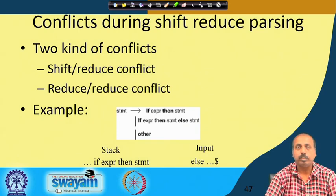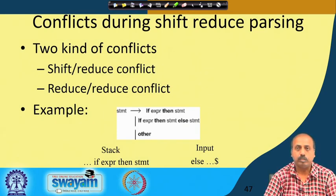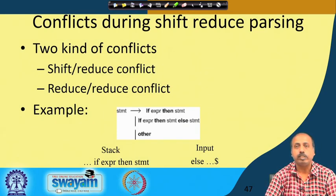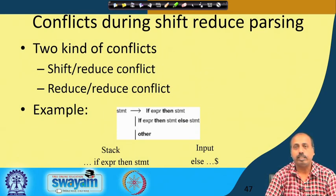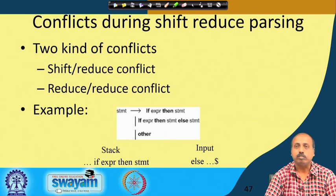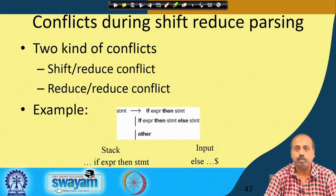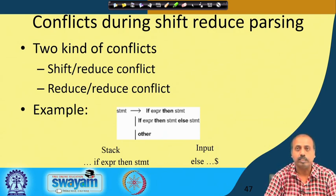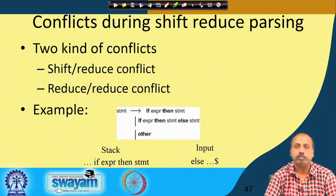In our last class we were looking into shift-reduce parsing policies and we have seen that there are 4 actions that can occur with shift-reduce parsing: shift, reduce, accept, and error. These were the 4 operations that a shift-reduce parser will do.